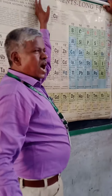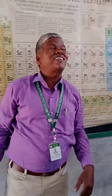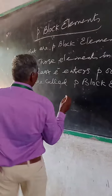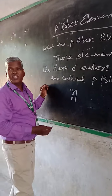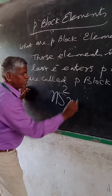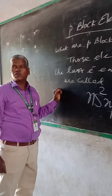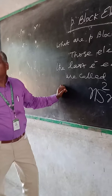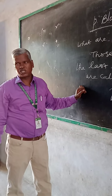If we look at the general electronic configuration of P block elements, it is ns2, np1 to np6.